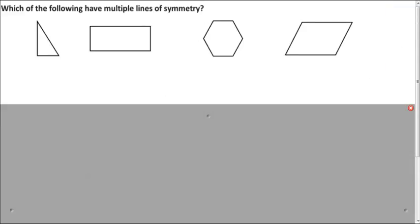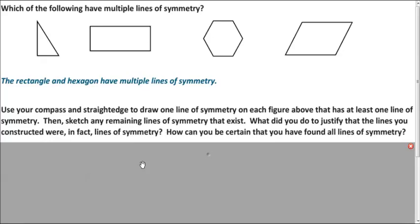So here's a few polygons. And we want to figure out which ones have lines of symmetry. So look at it for a moment, and then we'll reveal the answers. Turns out only the rectangle and the hexagon have lines of symmetry. And now, we want to draw those lines of symmetry in there. So take a moment and look at the rectangle and hexagon, and try to draw all the lines of symmetry that you can.